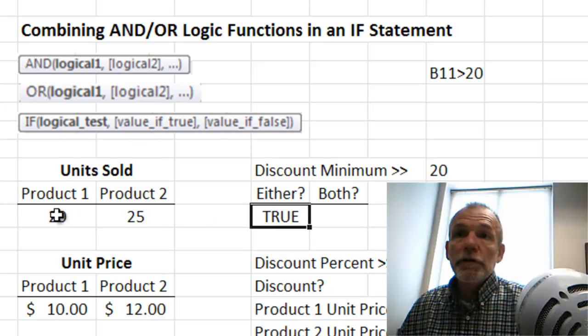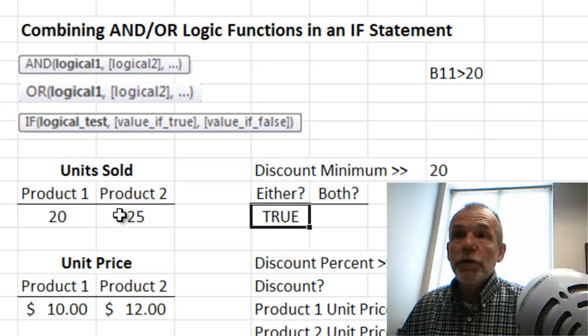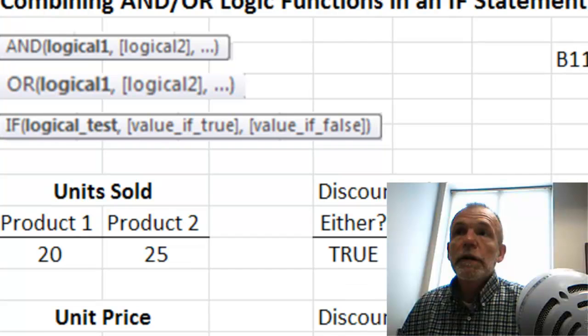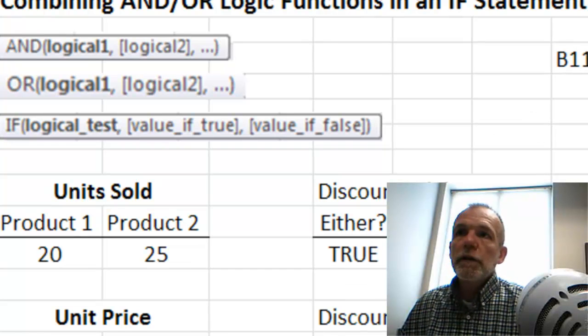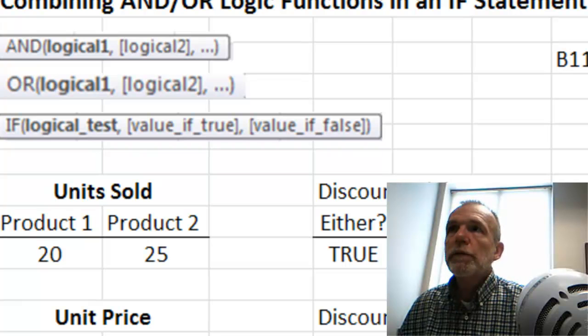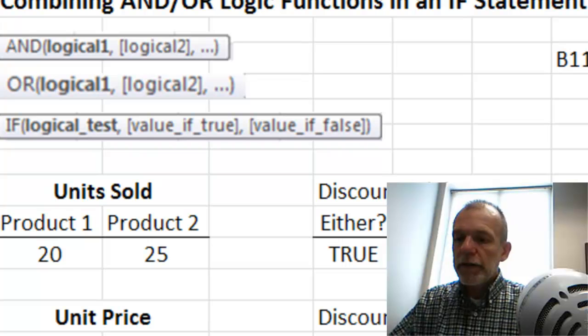Evaluates true because one of those is true, both aren't, but one is. Whereas with the AND, where they both have to be true, in this cell right here, that would be an AND condition, so equals AND.